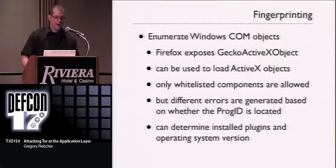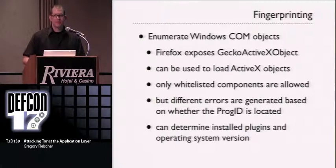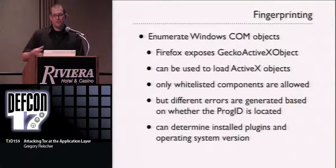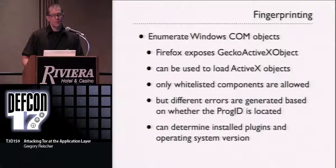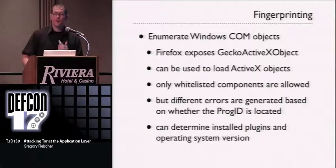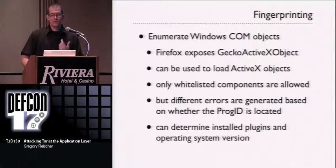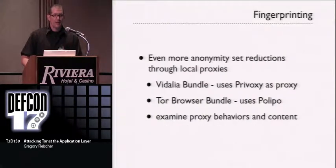We can also enumerate Windows COM objects. Firefox doesn't support COM and ActiveX, but there's an old Netscape thing called Gecko ActiveX Object. You can attempt to instantiate ActiveX objects, but there's a whitelist that doesn't really work. What's interesting is there's a difference in error messages returned depending on whether a COM object exists on your local machine or not. By testing for this existence, you can look for different plug-ins and add-ons installed, and even specific program versions — for example, Microsoft Word varies their COM object ProgIDs by version.